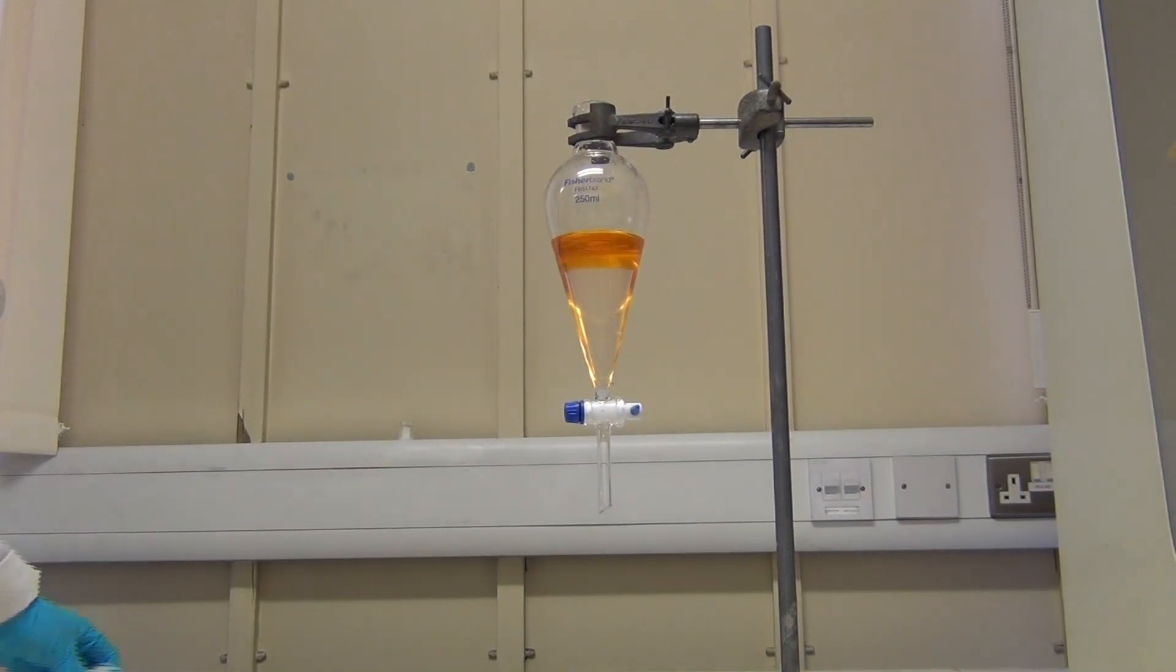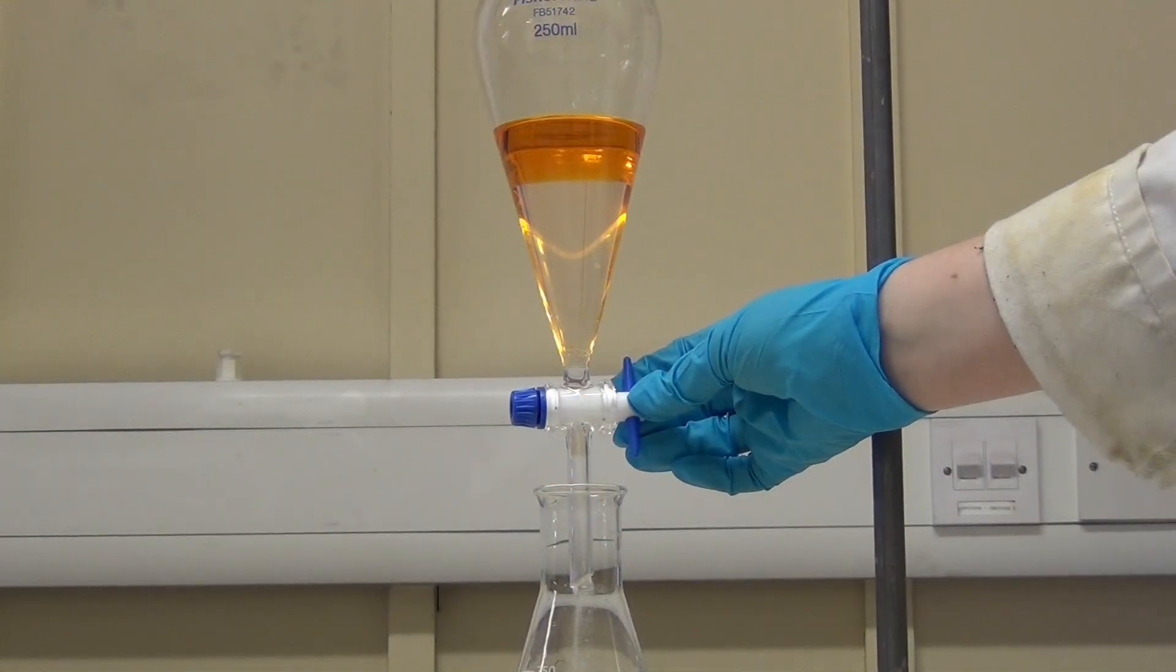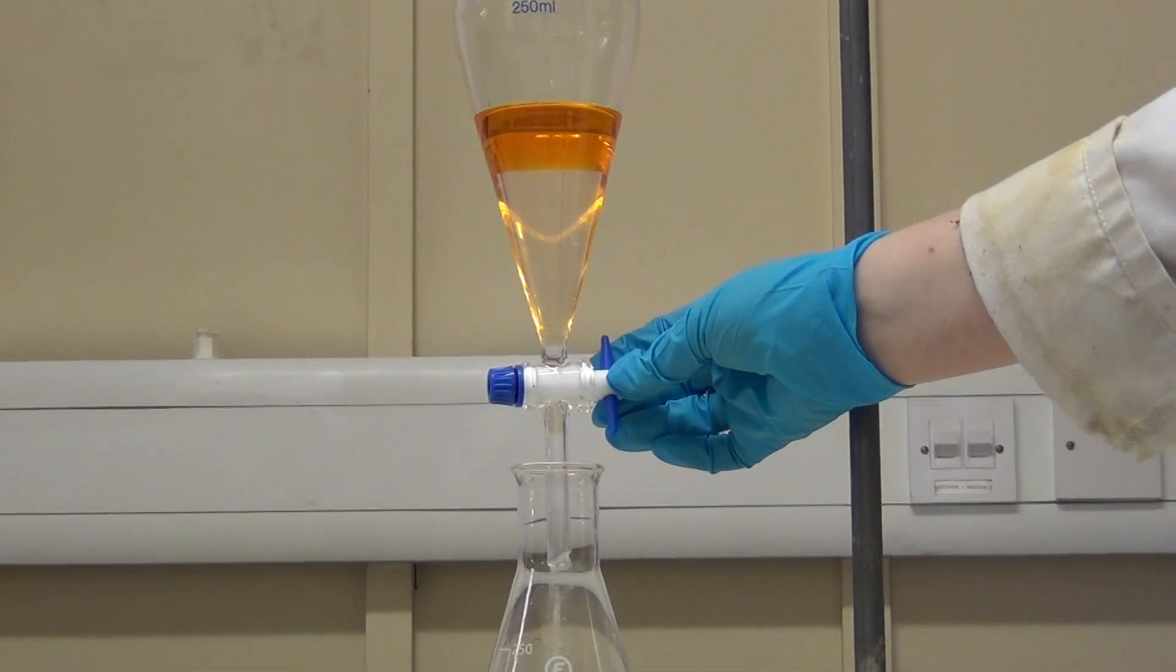Always start by removing the stopper from the top of the funnel. Open the tap and drain the first layer into a clean, conical flask.